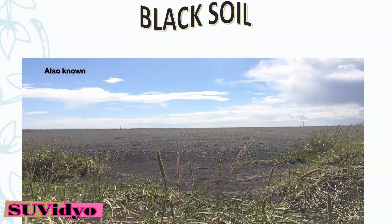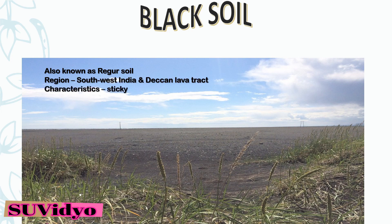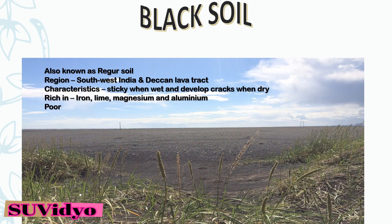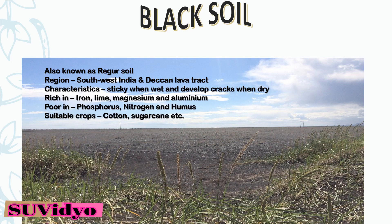Black soil is also known as regar soil. It is found in southwest India and the Deccan lava tract. It becomes sticky when wet and develops cracks when dry. Black soil is rich in iron, lime, magnesium and aluminium, but poor in phosphorus, nitrogen and humus. It is suitable for the growth of cotton, sugarcane and some other cereals.